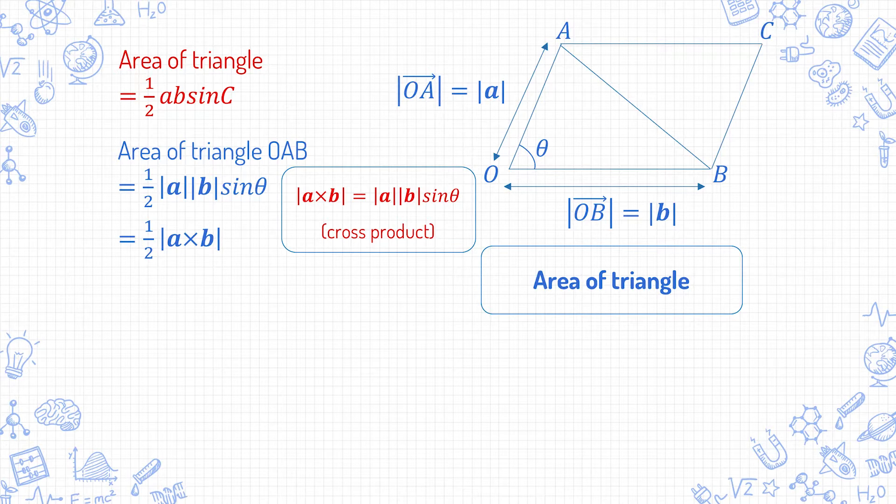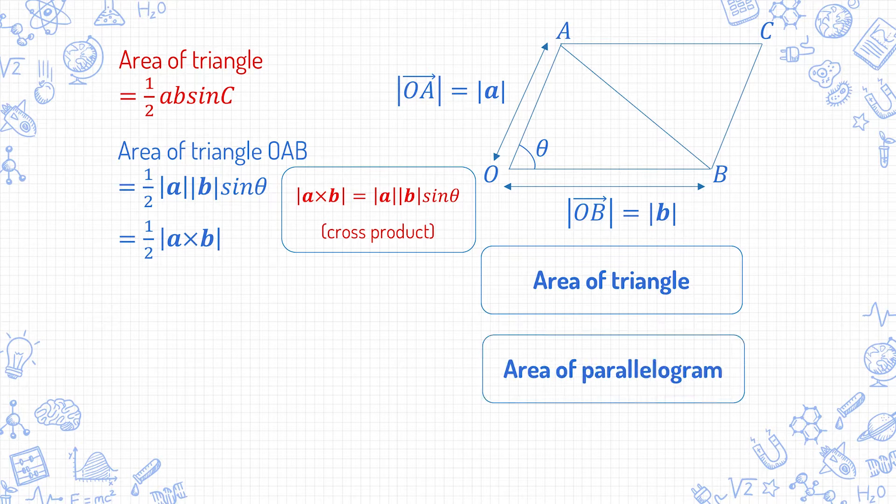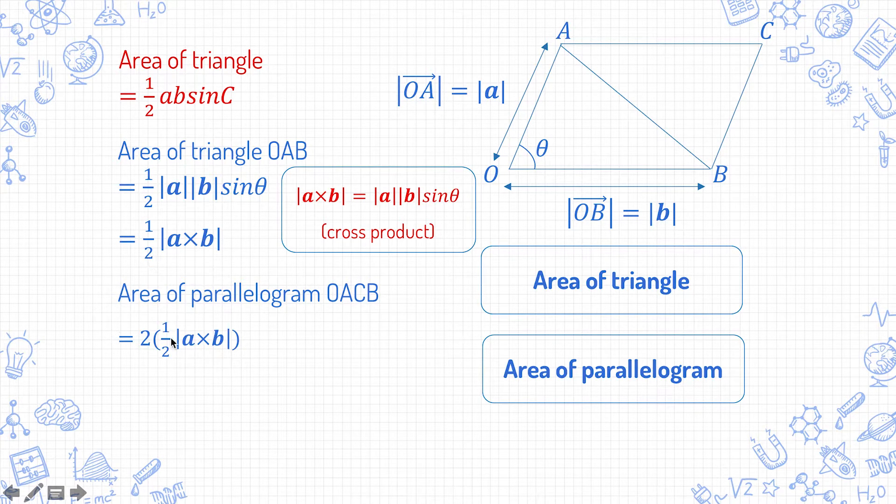Now suppose I add a point C here such that OACB is a parallelogram. How do you find the area of this parallelogram? Actually it's very obviously just two times the area of the triangle OAB. So the area of the parallelogram OACB is two times half of mod a cross b, which is equal to mod of a cross b.